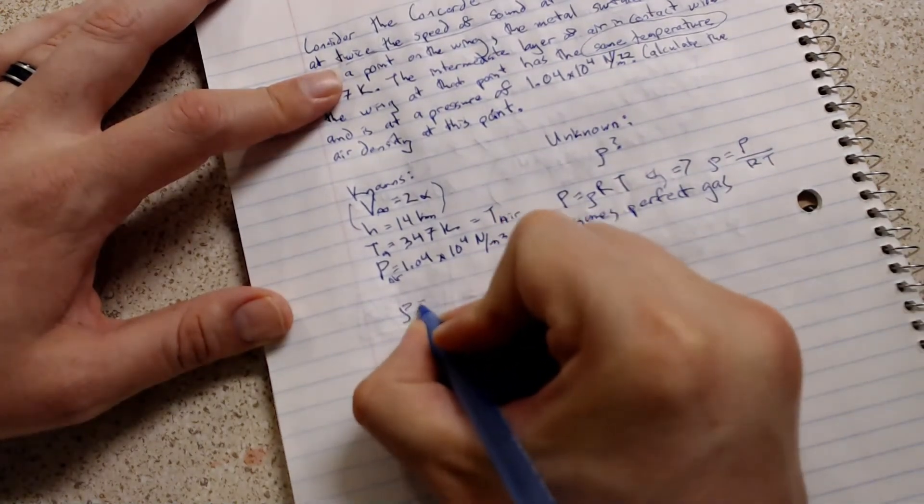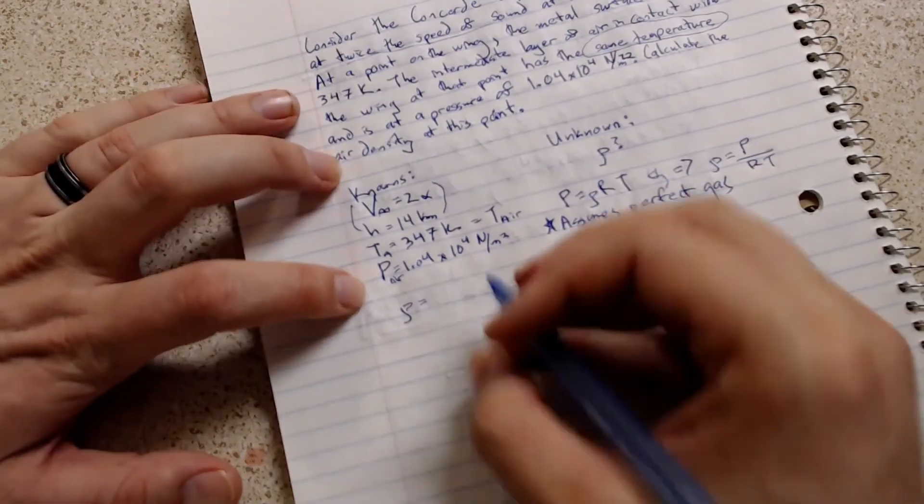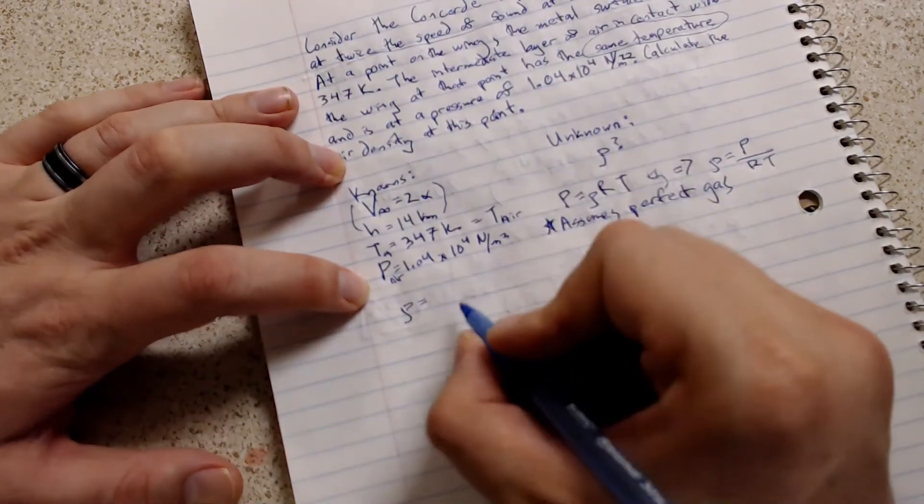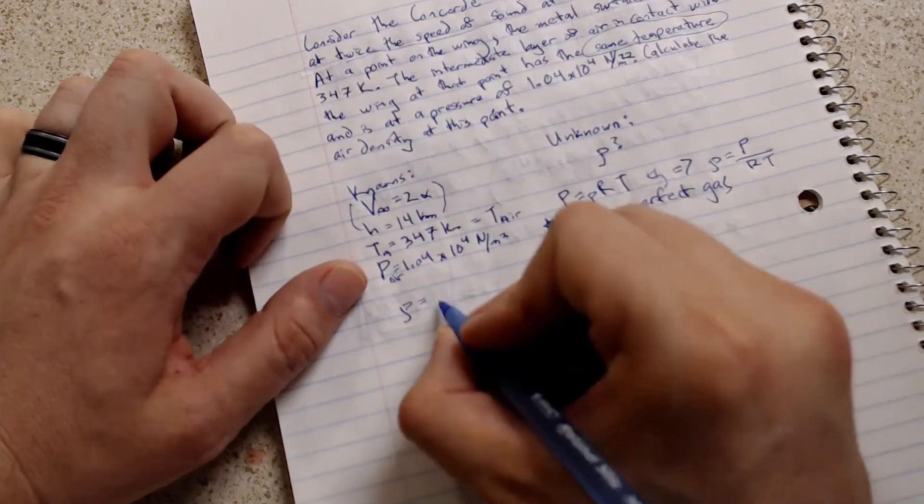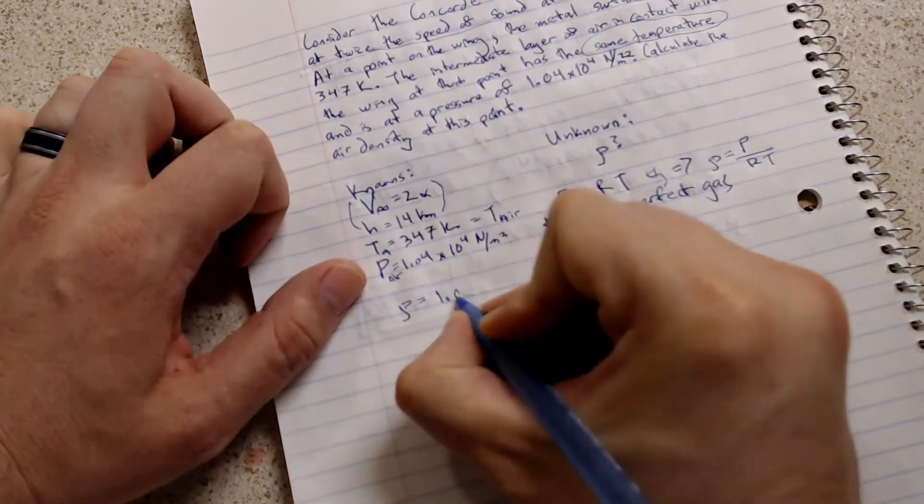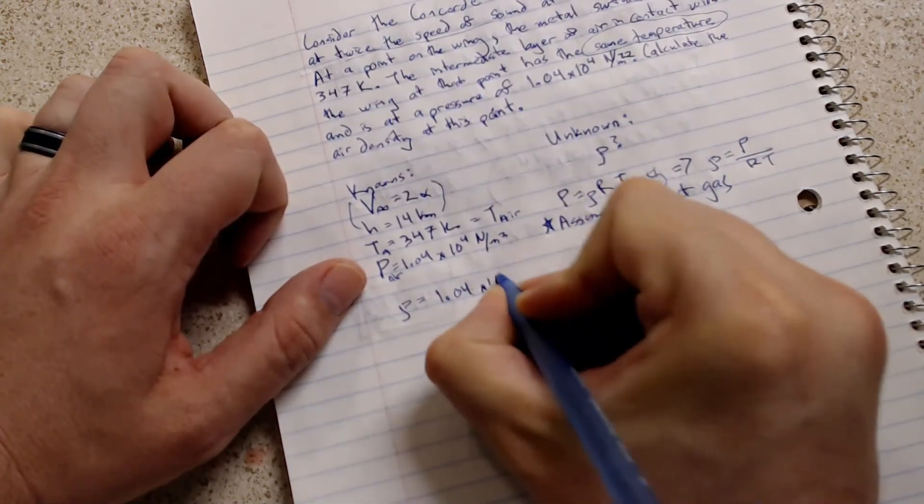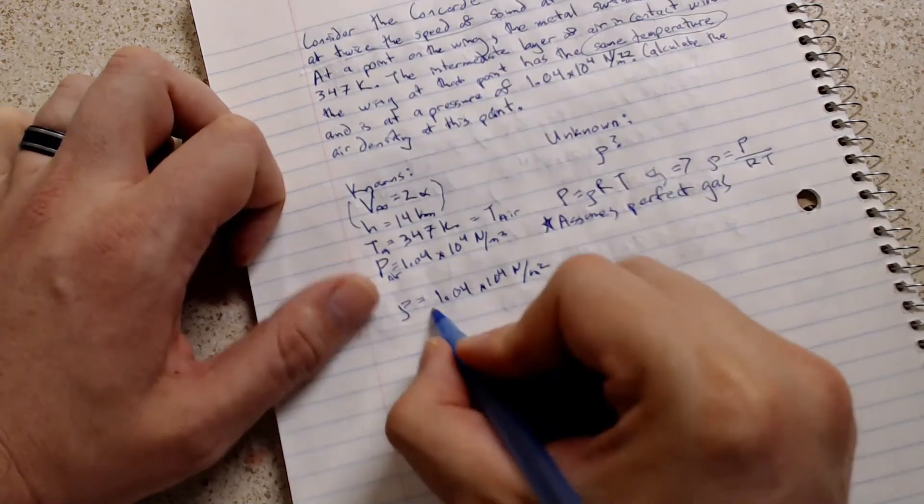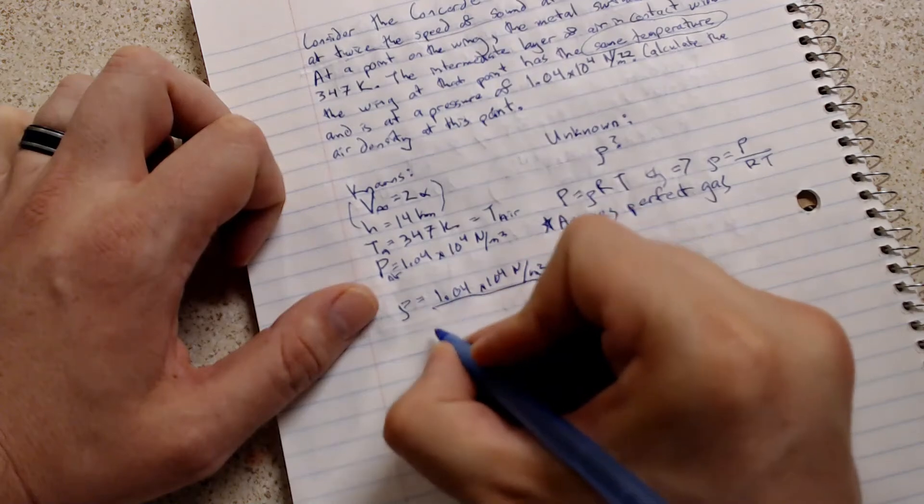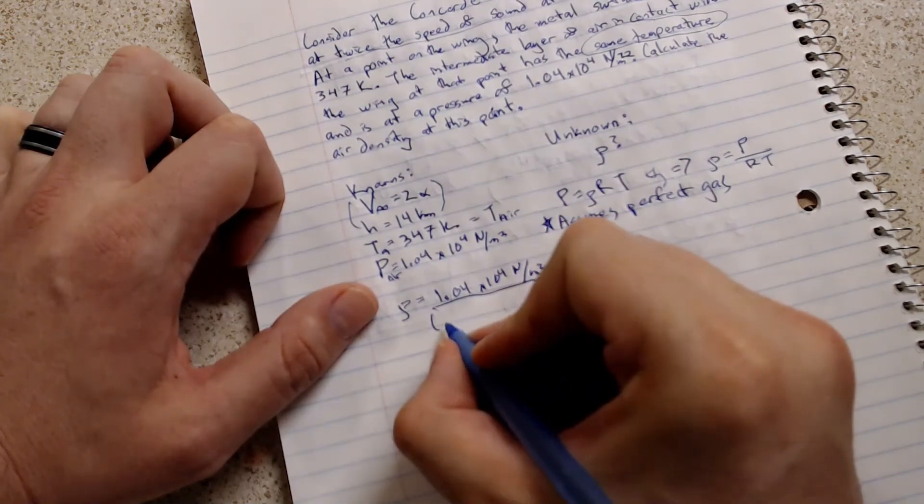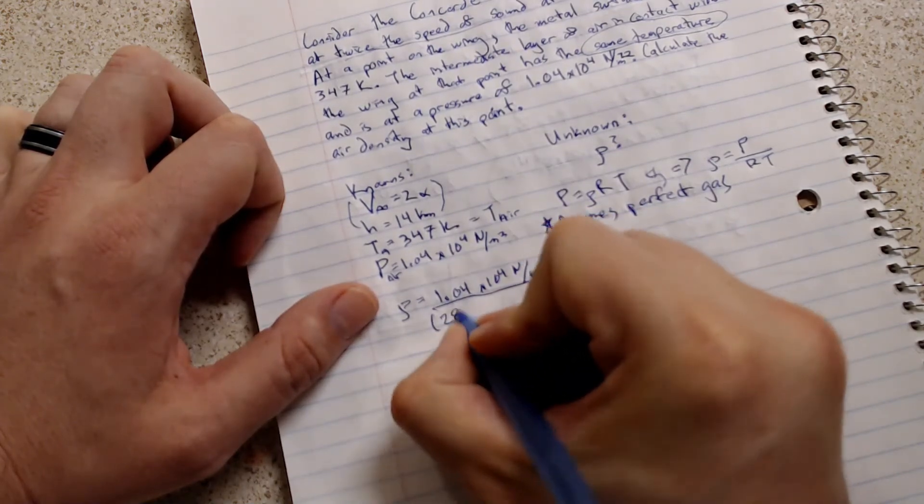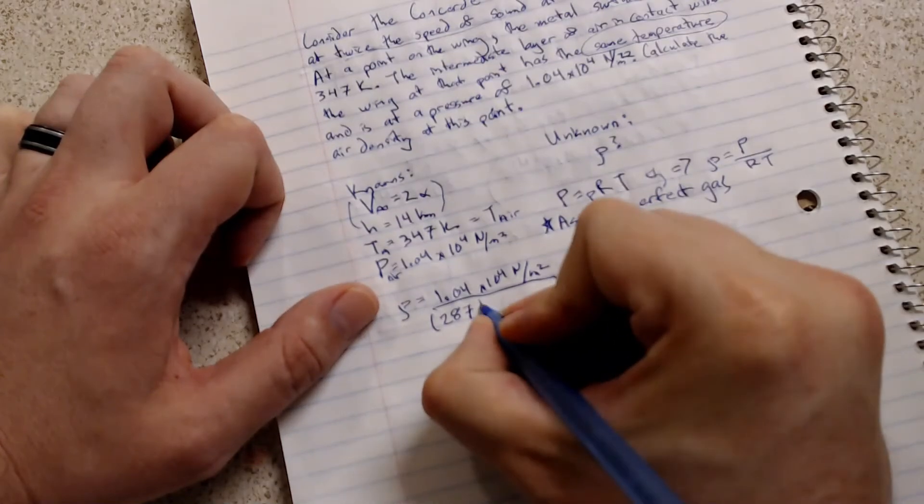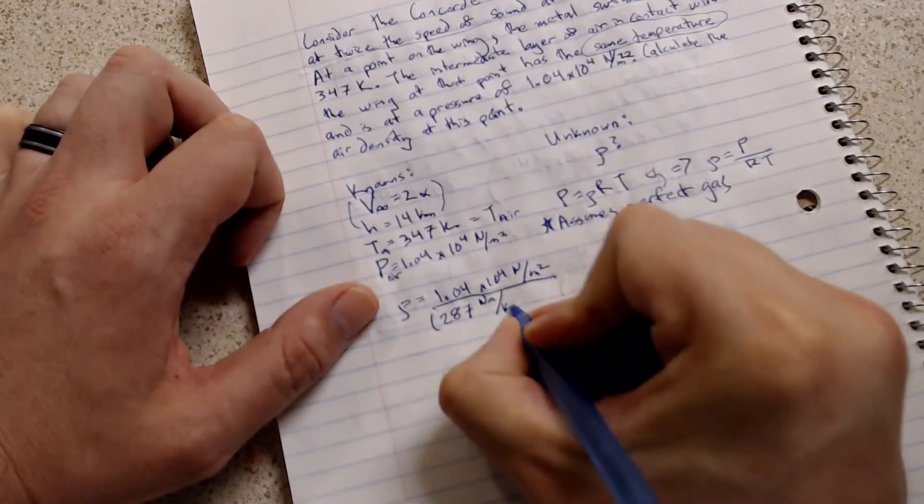Pressure. Throwing that over here. Putting the values into the equation. We get pressure, 1.04 times 10 to the 4th newtons per meter squared. Hey, look at that. That's the correct units.